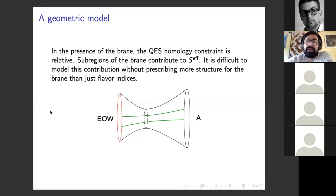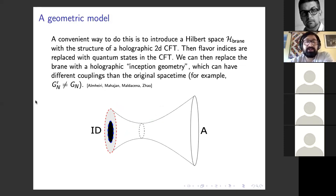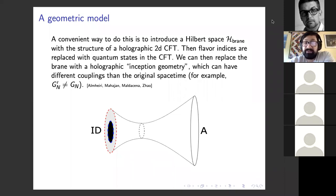A convenient way to introduce more structure is to introduce a full Hilbert space H_brane, which has the structure of a holographic 2D CFT. The flavor indices I talked about before are replaced with quantum states in the CFT. Since we've taken the CFT to be holographic, we can replace the brane with what I'll call the inception geometry, which is just the holographic dual of that CFT. So we have one CFT on the asymptotic region and another CFT on the brane, and we can replace the brane state with this gluing surface — the gray disk here is the inception geometry. We can choose a state we like in this 2D CFT Hilbert space; we can actually take it to be a black hole.